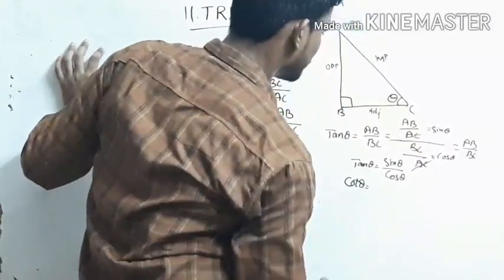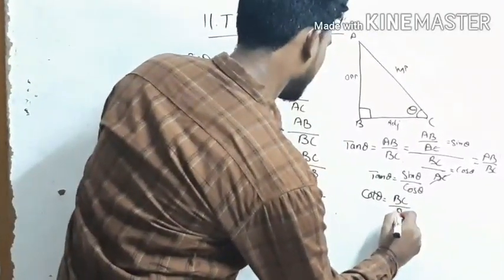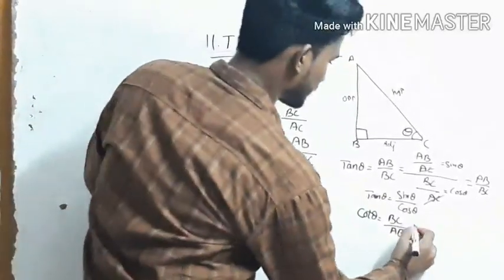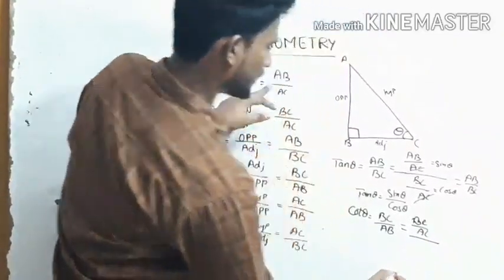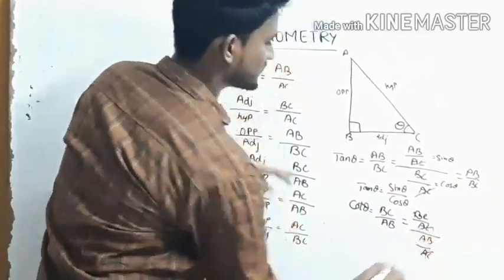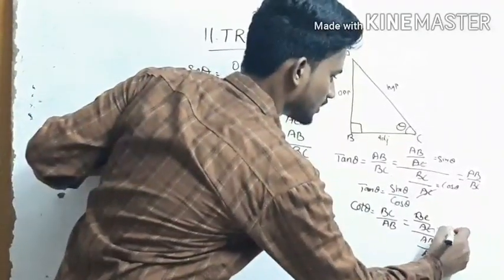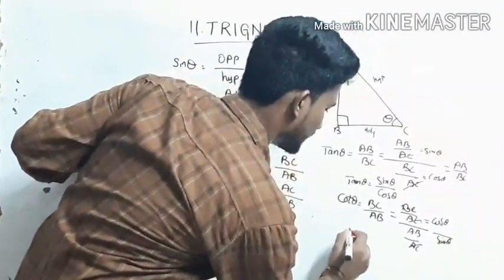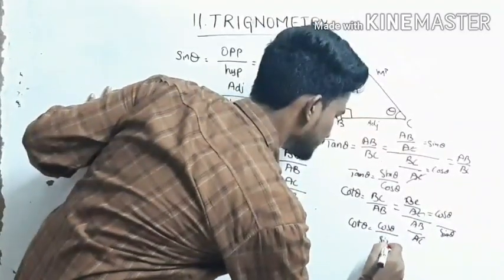Cot theta equals to BC by AB. We can also write this as BC by AC divided by AB by AC, with AC cancelling, giving BC by AB. So BC by AC is cos theta and AB by AC is sin theta. Therefore, cot theta equals cos theta by sin theta.